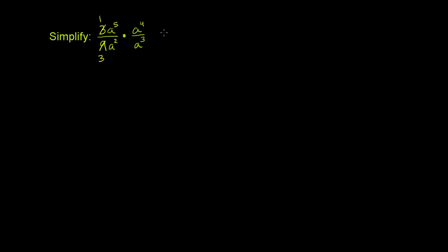If we just multiply the two expressions together, this equals a to the fifth times a to the fourth in the numerator — and we don't have to worry about the 1, it doesn't change the value. In the denominator we have 3 times a squared times a to the third.